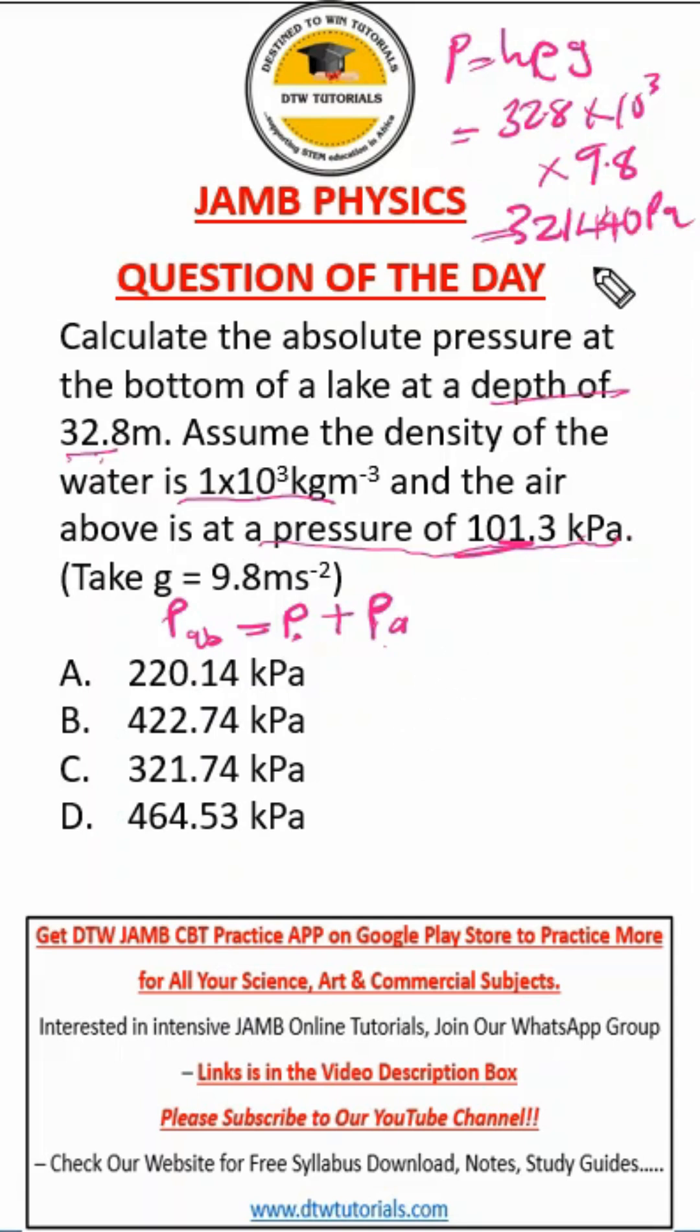Now we're going to add this to atmospheric pressure. This value is 101.3 kilopascals. You can see where this question is tricky - this is kilopascals, so you have to convert this to kilo. To convert to kilo means we divide by 1000, so when we divide, our decimal point will shift three places.